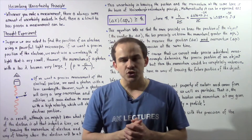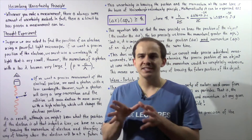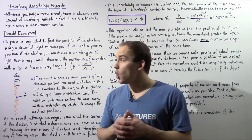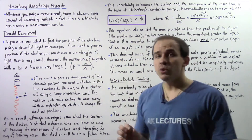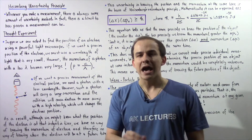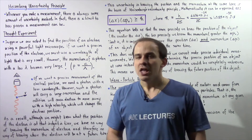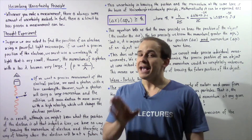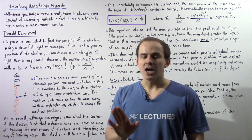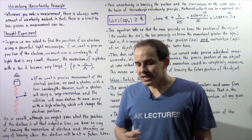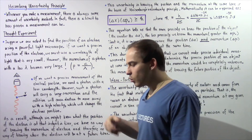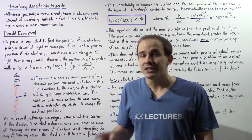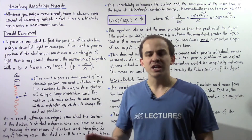Suppose we have an electron, and we are asked to determine the position of that electron using some type of hypothetical device — let's suppose a powerful light microscope. If we want a precise position of that electron at some instant in time, the wavelength of light used by that microscope has to be very small. It has to be on the order of the size of our subatomic particle, our electron. Now, recall that if we decrease the wavelength of the light used by the microscope, we increase the energy and the momentum carried by the photon of light.